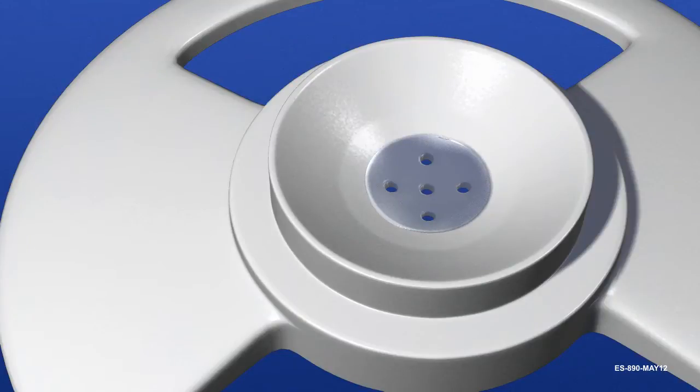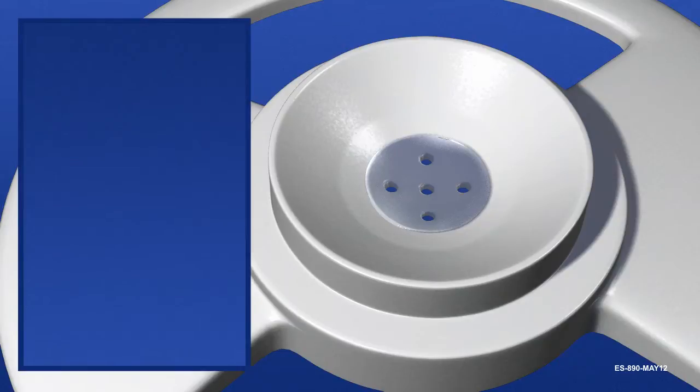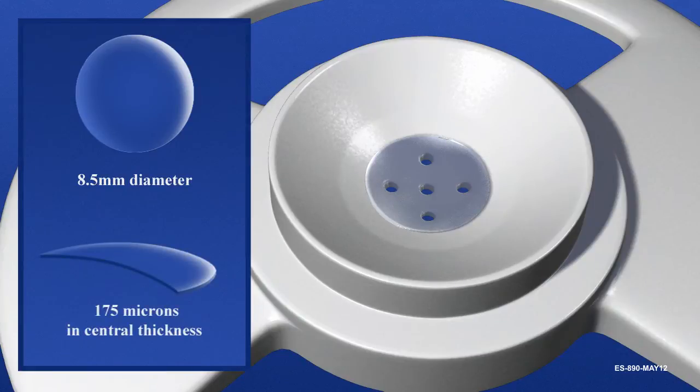Allograft tissue is refined by the surgeon to the preferred diameter. The Endosurter is designed to insert tissue measuring less than or equal to 8.5 millimeters in diameter and 175 microns in central thickness.